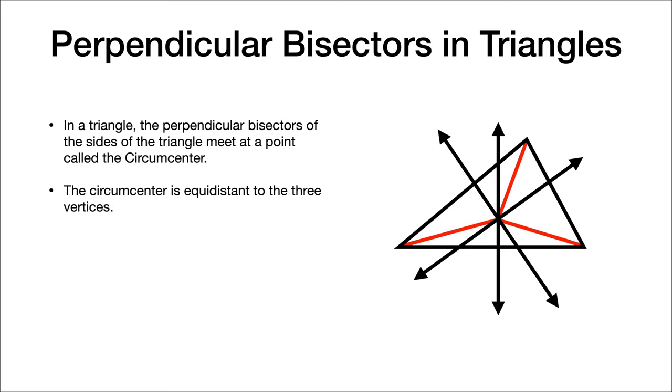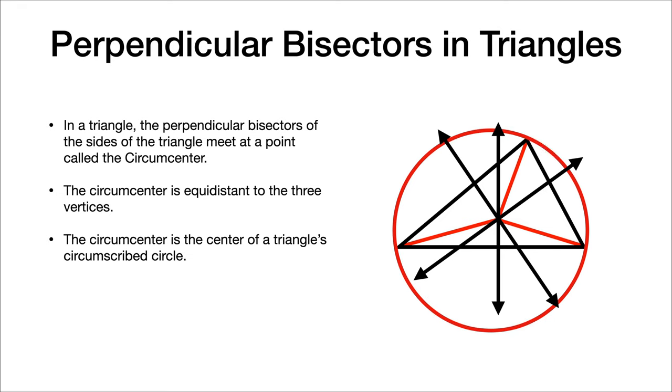The circumcenter is equidistant to the three vertices. Now you might be noticing the word circumcenter and thinking of things like circumference. That's because, well, it is. If you look at each of these lines, consider that a radius to this circumscribed circle. The circumcenter is the center of the triangle's circumscribed circle right there.